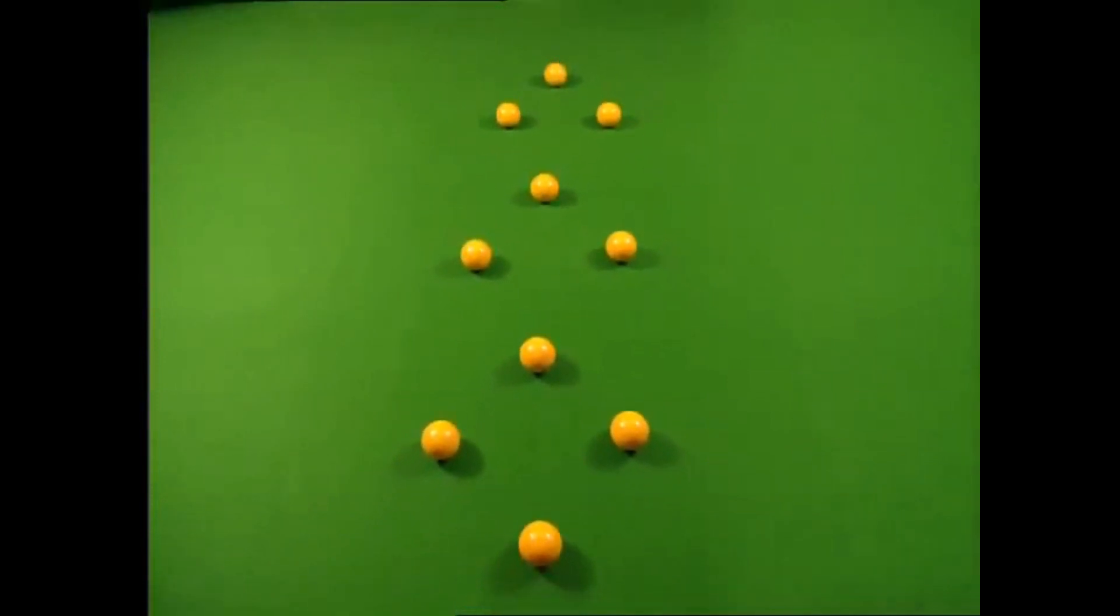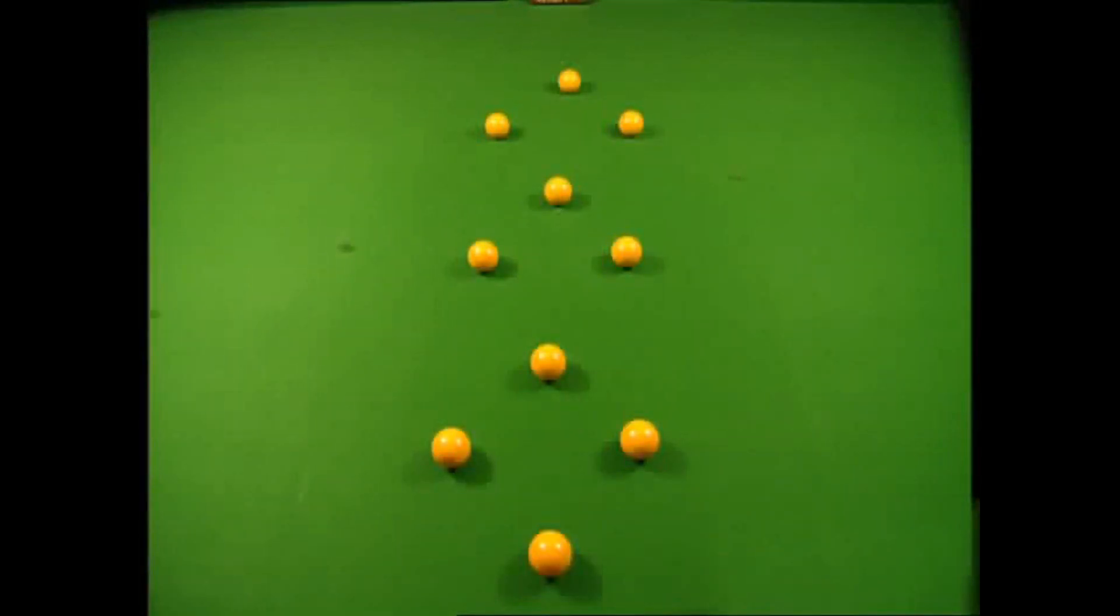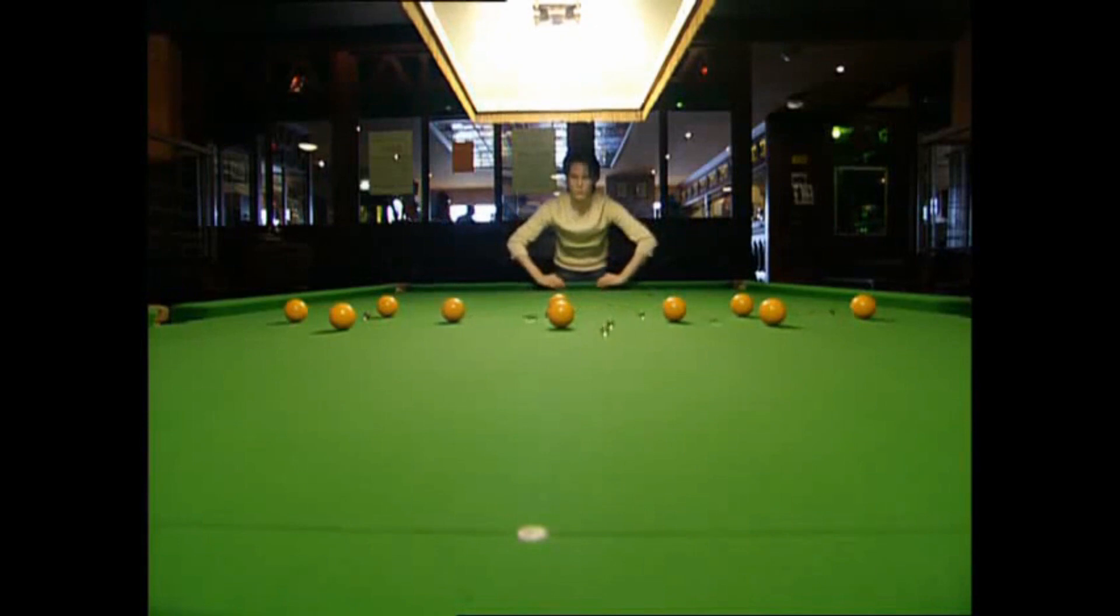Imagine each snooker ball is the nucleus of one gold atom, and these marbles are the radioactive particles. Aim the marbles at the snooker balls. Most roll straight past to be detected behind our model gold atoms. It's this that made Rutherford think that there must be a lot of space within each gold atom.